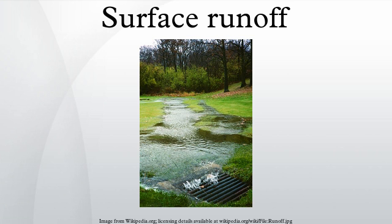Flooding occurs when a watercourse is unable to convey the quantity of runoff flowing downstream. The frequency with which this occurs is described by a return period. Flooding is a natural process which maintains ecosystem composition and processes, but it can also be altered by land use changes such as river engineering. Floods can be both beneficial to societies or cause damage — agriculture along the Nile floodplain took advantage of seasonal flooding that deposited nutrients beneficial for crops. However, as the number and susceptibility of settlements increase, flooding increasingly becomes a natural hazard.